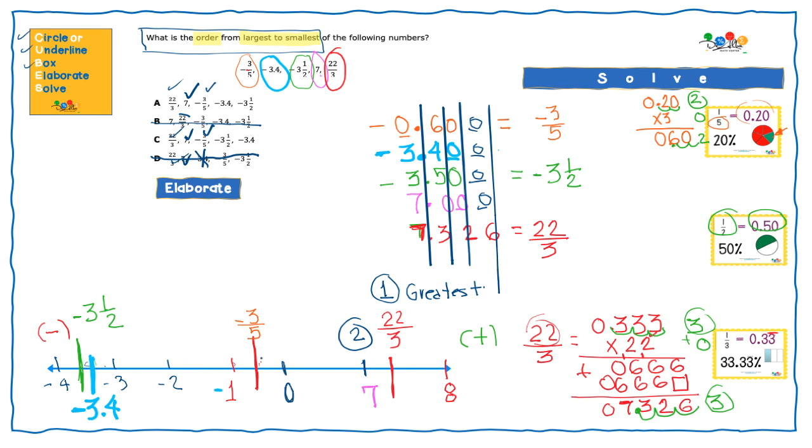Now I'm going to go, I keep going towards the left. And my next number is negative 3.4. So this should be the third number. Negative 3.4. It's working in here. And it didn't work in here. So looks like A gotta be my answer. And then after this one, the last one is negative 3 and 1 half. And it did work. And we found our answer.